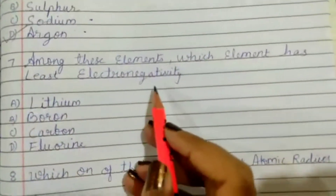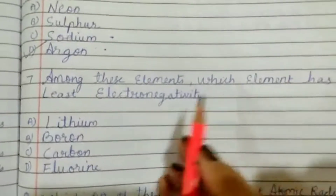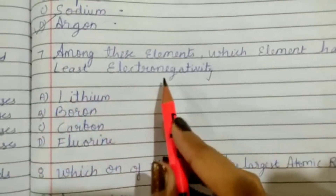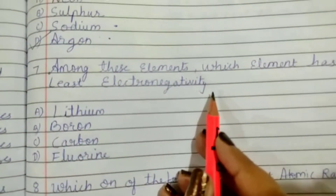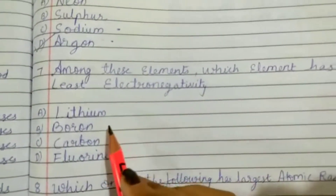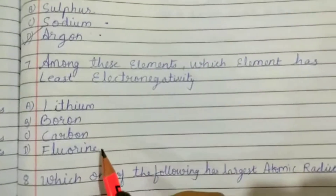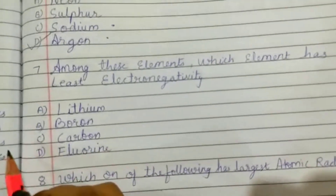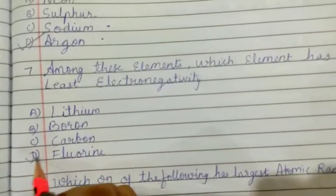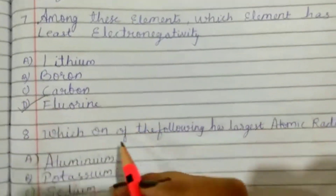Among these elements, which element has the least electronegativity — lithium, boron, carbon, or fluorine? The correct answer is D: fluorine.